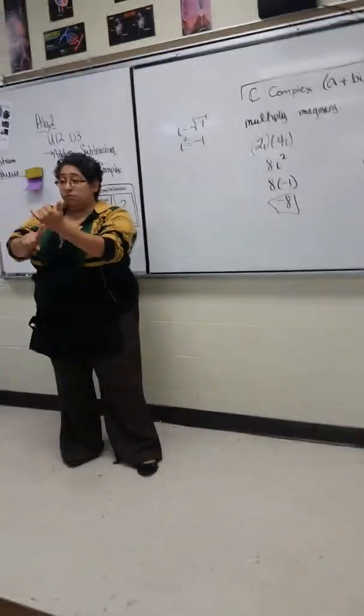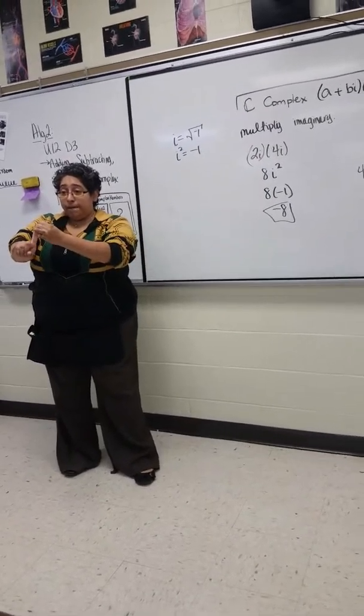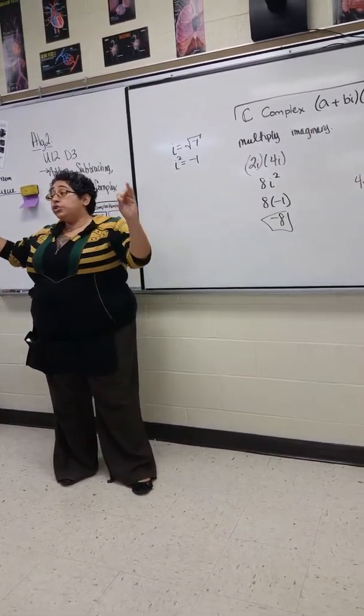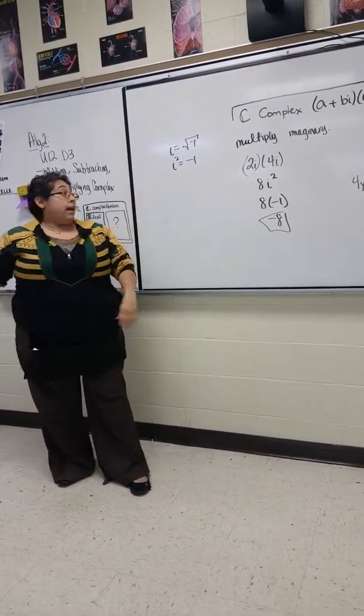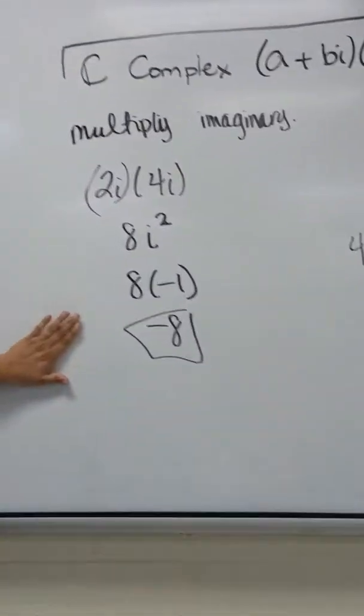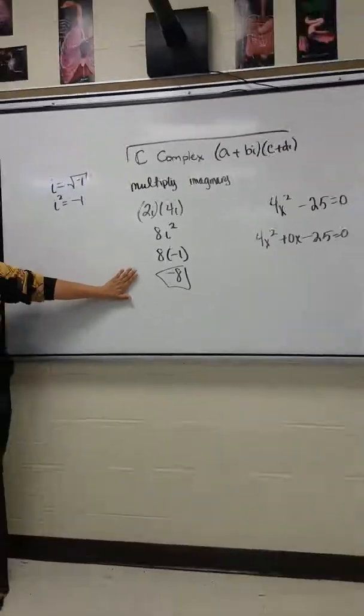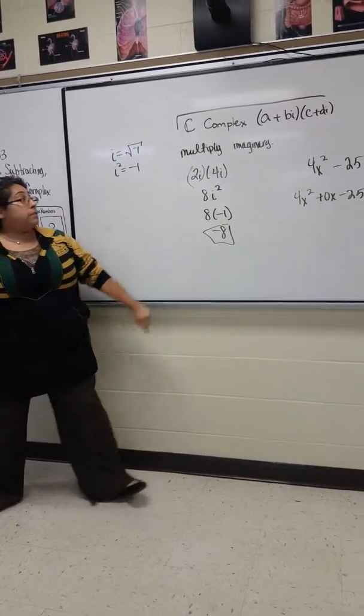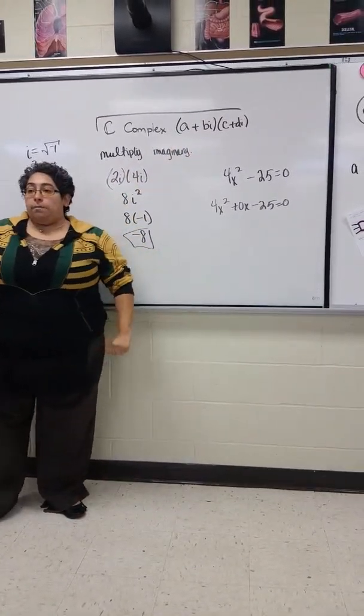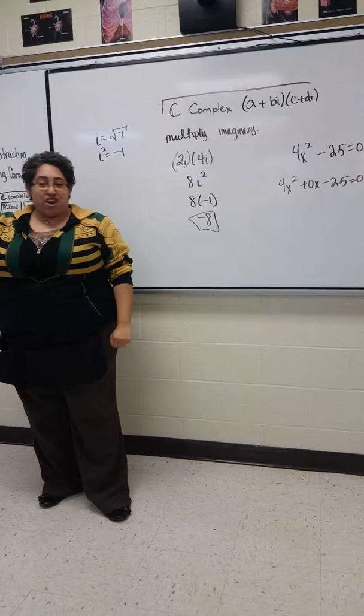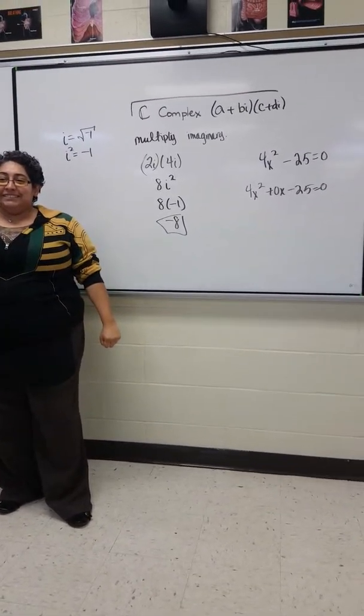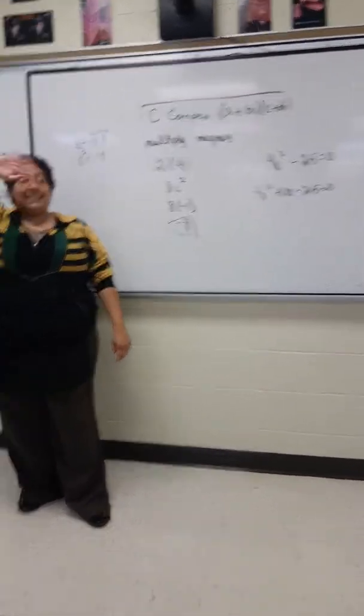So you can add them now. You can subtract them now. We know what to do when they're equal. And we can multiply at least the imaginary portions. Tomorrow, full complex multiplication, which is not complex at all. All right. That's it. That's all I have. Bye.